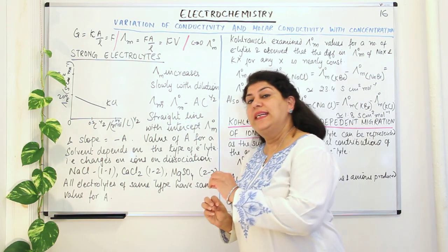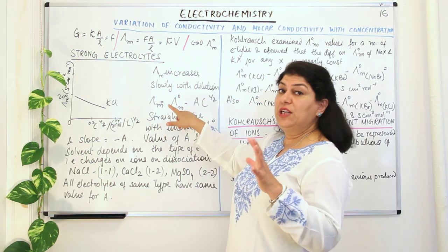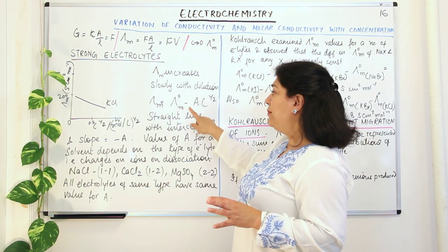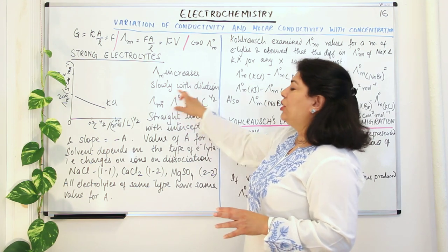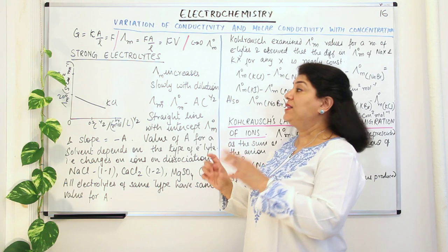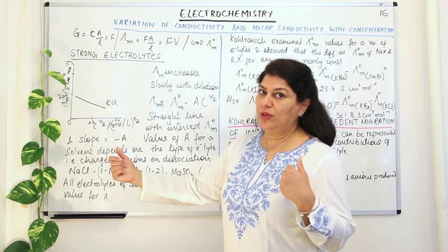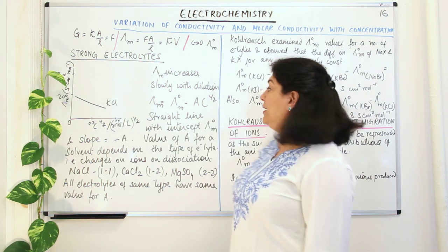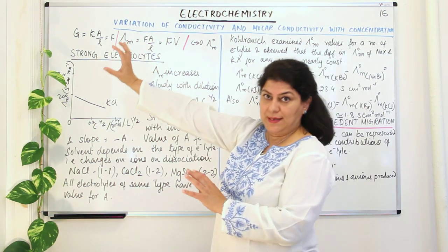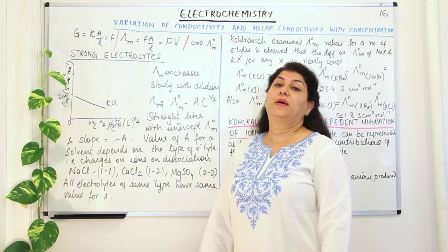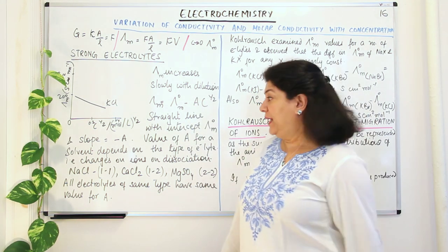If we want to relate molar conductivity to limiting molar conductivity, the relation is: molar conductivity is equal to λ°m minus A times c to the power half (under root c). λ°m is the limiting molar conductivity — when the dilution is so much that the concentration is almost equal to zero, the volume cannot expand any further and that is the limiting value. At any point of time, the molar conductivity would be that maximum limiting molar conductivity minus A into c to the power half, where c is the concentration and A is a value that depends on the nature of the electrolyte.